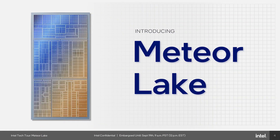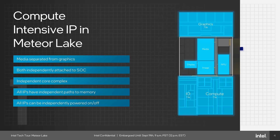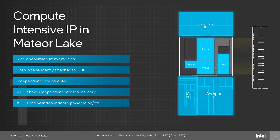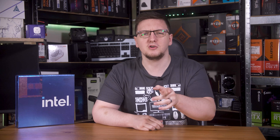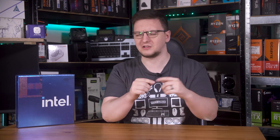Unlike AMD, there are actually going to be four tiles in their mobile package: the compute tile (aka the core die), the IO tile, the SOC tile, and a graphics tile. Let me run you through what each of those actually do.